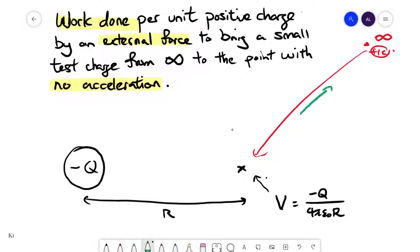What the external force needs to do is that it needs to point in this manner to ensure that this plus one coulomb charge does not accelerate. I can say that the work done by this external force is therefore negative, since it is directed opposite to the motion of this plus one coulomb charge. Therefore by definition the potential is negative.